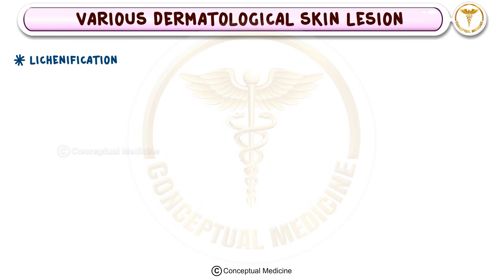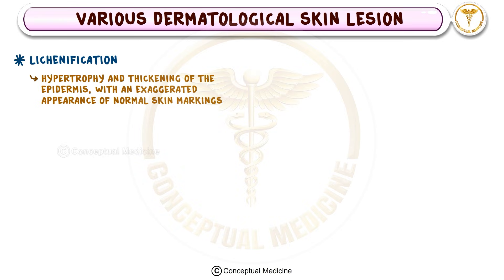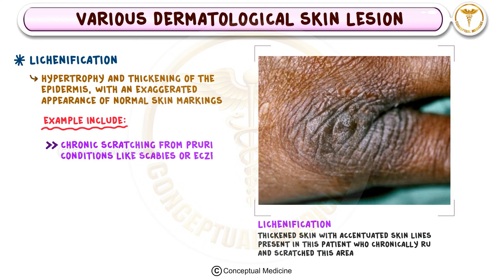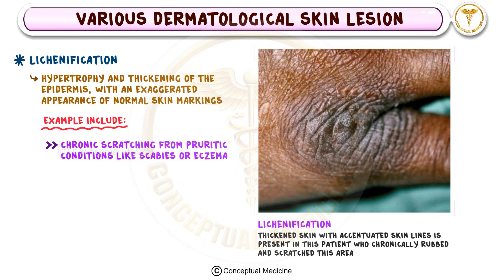Lastly, we have lichenification, which is the thickening and hypertrophy of the epidermis, leading to an exaggerated appearance of normal skin markings. This occurs due to chronic scratching, often seen in pruritic conditions like scabies or eczema. And that concludes our discussion of dermatological skin lesions. Thank you for watching.